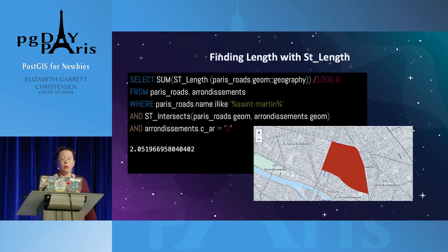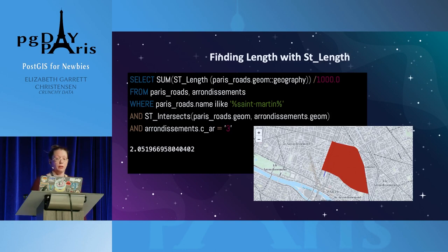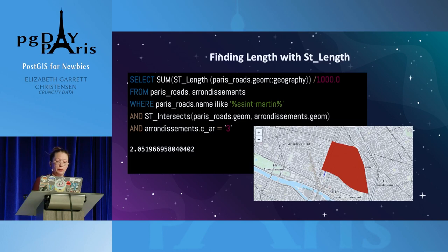The ST_Length function will let you calculate lengths, and you can do that same casting to find that. You can divide by 1,000 if you want to get something in kilometers.